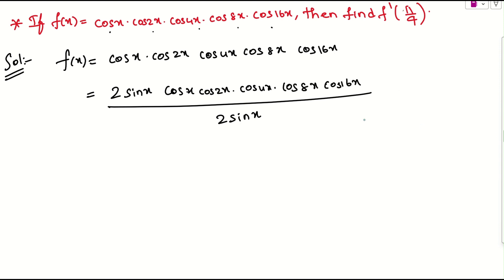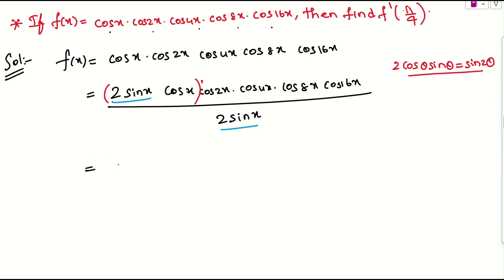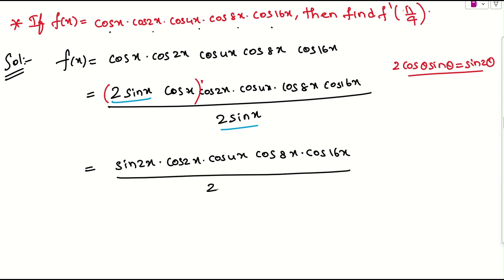Applying that formula to the first two terms: 2 sin x times cos x gives sin 2x. So the expression becomes sin 2x times cos 2x times cos 4x times cos 8x times cos 16x, all divided by 2 sin x. Again, 2 is missing to apply the formula, so I multiply and divide by 2.